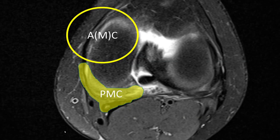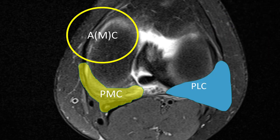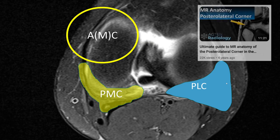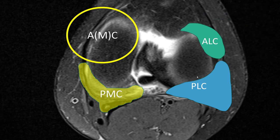We all know the posteromedial corner — I made a specific video about the anatomy and all five components of the posteromedial corner. I also have a video specifically about the posterolateral corner, so go check that out via the link below. There is also the anterolateral corner, primarily the anterolateral ligament and the iliotibial band. So we know these corners, but there is also the AMC — the anteromedial corner.